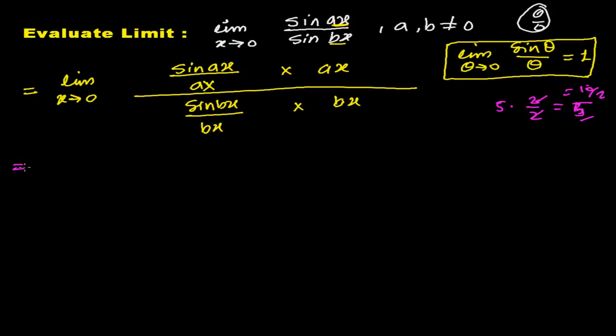Now, see here, I told you, when limit angle tends to 0, sin angle over the angle equals to 1. But here, our angle is ax, and here, our angle is bx. So here, one thing I want to tell you, when x tends to 0, automatically, ax will tend to 0. And again, when x tends to 0, definitely, another constant, whatever, by any constant you multiply, bx will tend to 0.